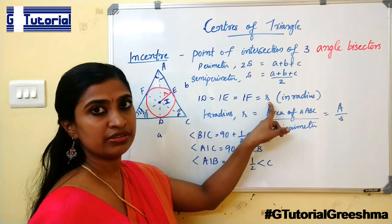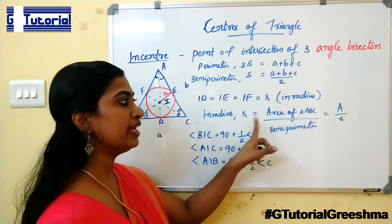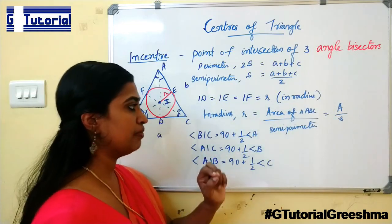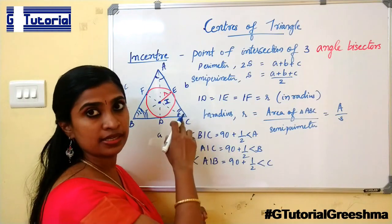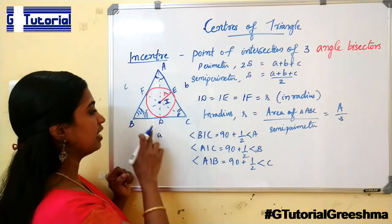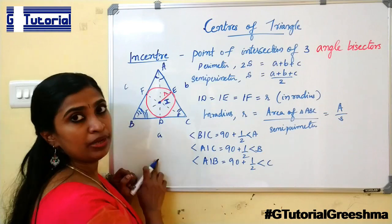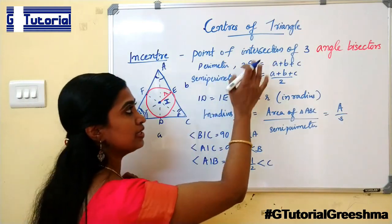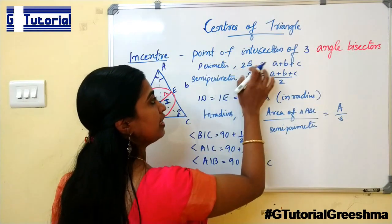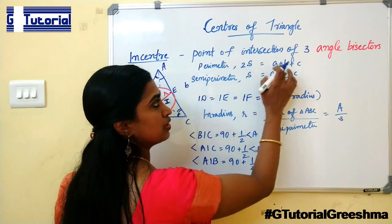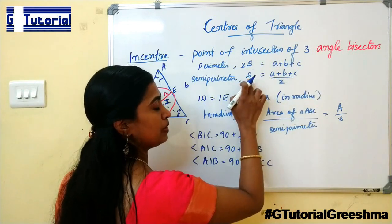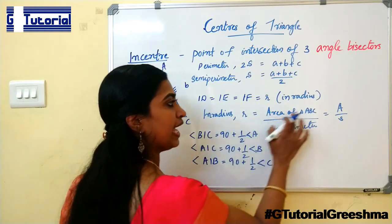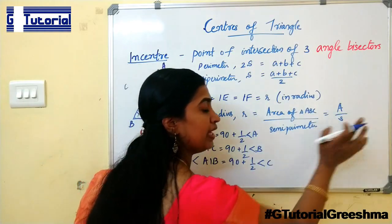The inradius r is equal to the inradius. Inradius is given by the area of the triangle divided by the semi-perimeter. Semi-perimeter: if the sides of the triangle are a, b, and c, then the perimeter is a plus b plus c, and the semi-perimeter is half of the perimeter. We denote the perimeter as 2S, so S is the semi-perimeter: S equals (a + b + c) / 2. Inradius is given by area divided by semi-perimeter, that is A by S.